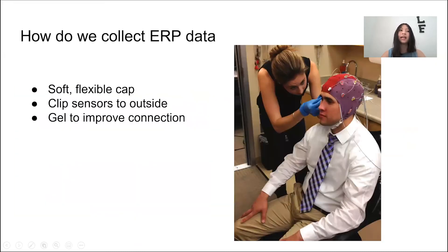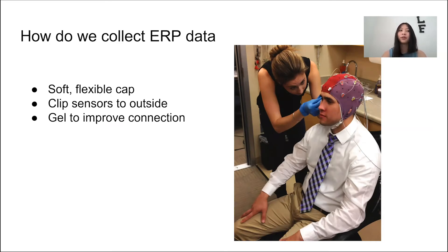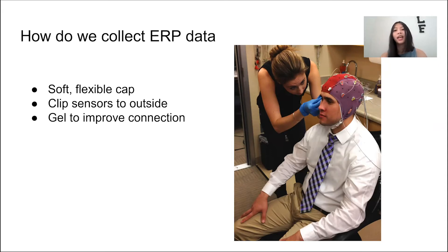So how do we collect ERP data? What's great about EEG and ERP is that it's non-invasive and should present little to no discomfort to the person. We fit people in a soft, flexible cap, and then we can clip the electrode sensors on the outside of the cap. Then we insert gel into the electrodes to improve signal detection. After we're done, the cap can be taken off — the worst is unfortunately the sticky gel in the hair.